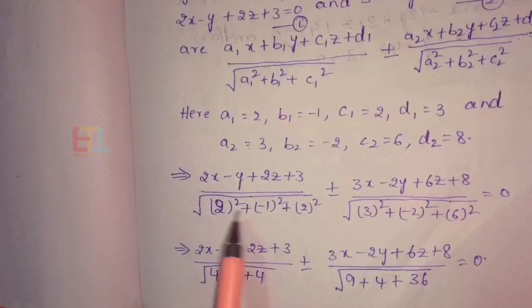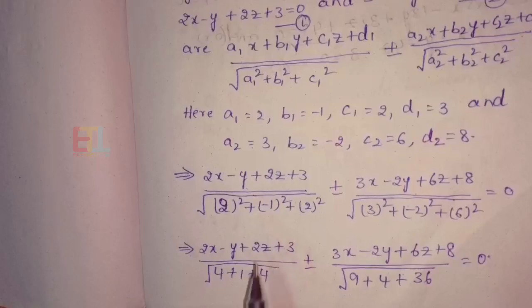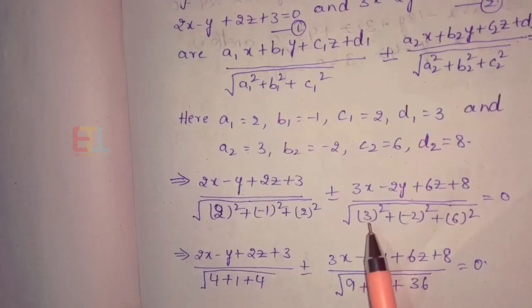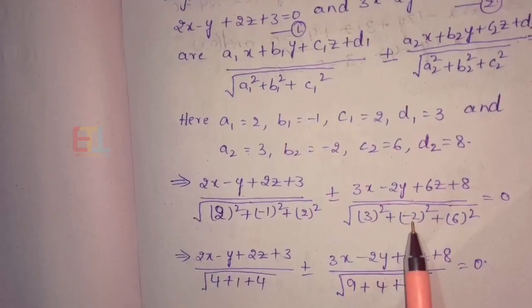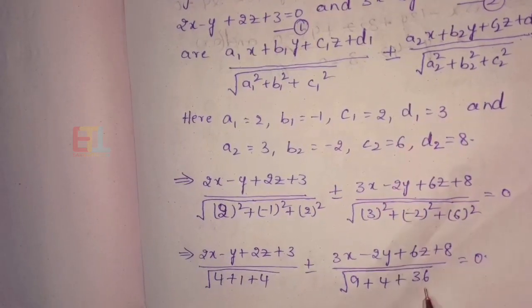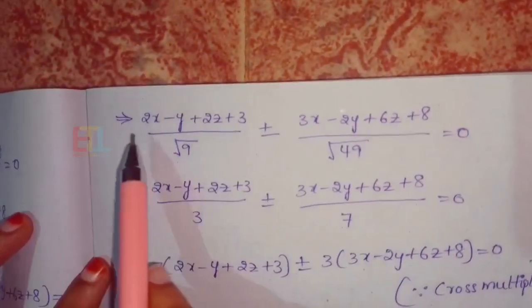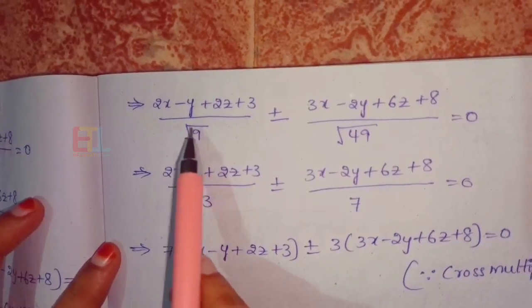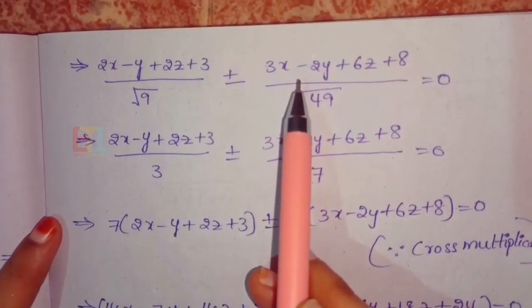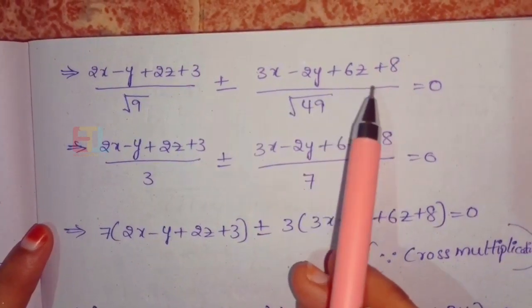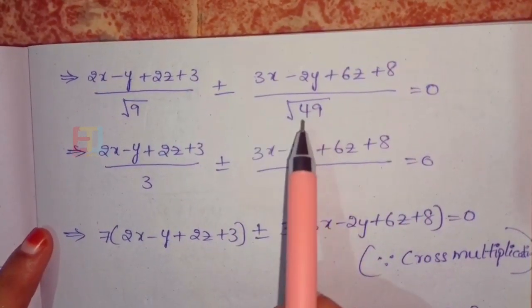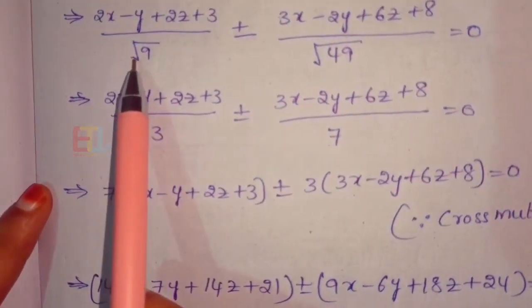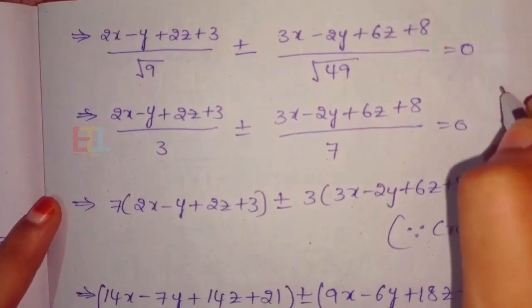After substituting and simplifying, we get 2x minus y plus 2z plus 3 divided by root of (4+1+4) plus or minus 3x minus 2y plus 6z plus 8 divided by root of 49, equal to 0. Root of 9 is 3, and root of 49 is 7.